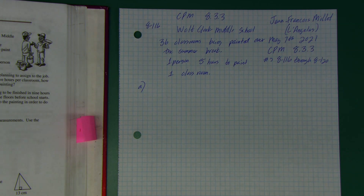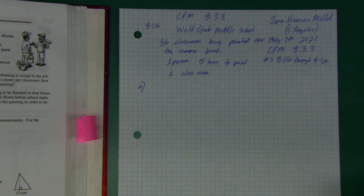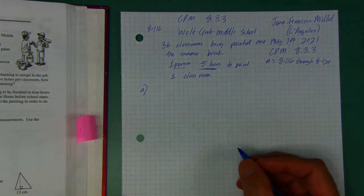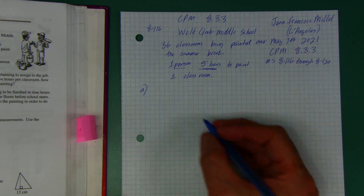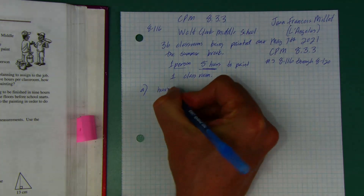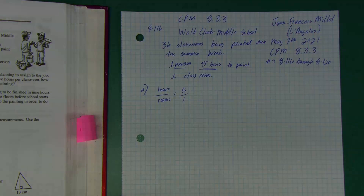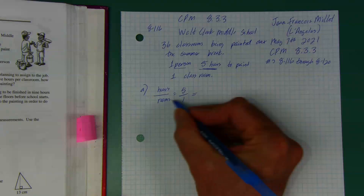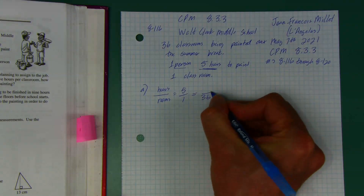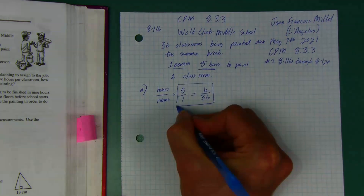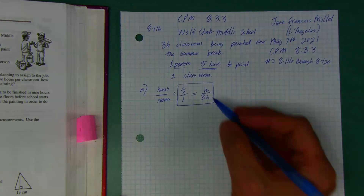The first question asks how many total hours it would take for one person to paint all the classrooms. We know one person takes five hours to paint one classroom. So we set up a ratio: five hours per one room. Now instead of one room we have 36 rooms, and we're looking for the total hours. This becomes our proportion.